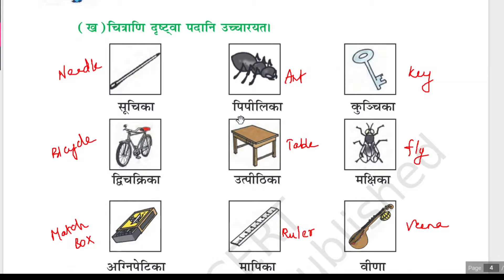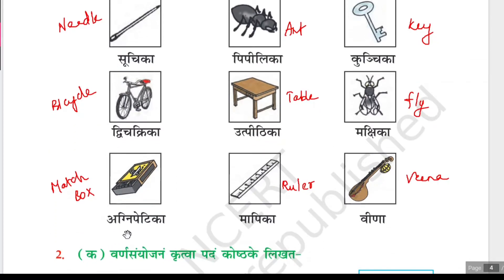Pipilika means ant. Kunchika means key. Dvichakrika means bicycle. Utpeetika means table. Makshika means fly. Agnipetika means matchbox. Mapika means ruler. Veena is a musical instrument.